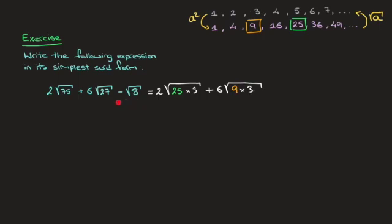Moving on to the third and last term in this expression, which is being subtracted — let's write a minus right here. Just as for the other two, we need to simplify this square root as much as possible. For that, we look for the largest square factor of 8 that we can find inside this list of square numbers.